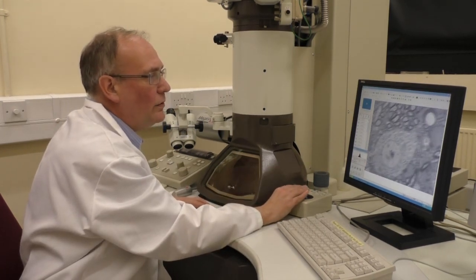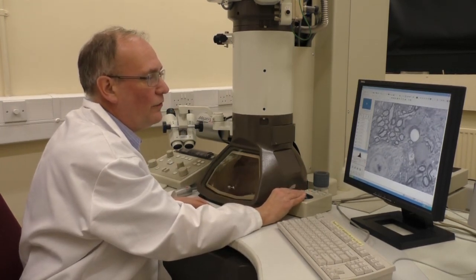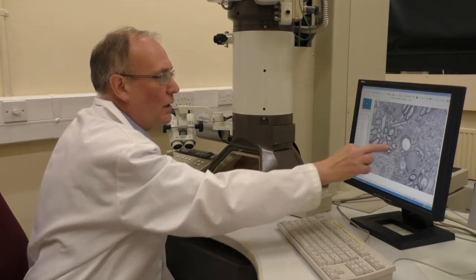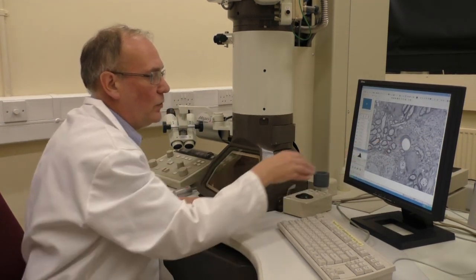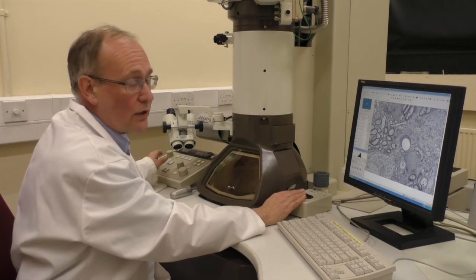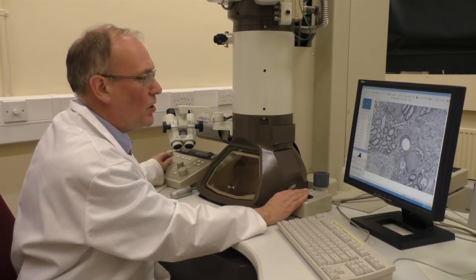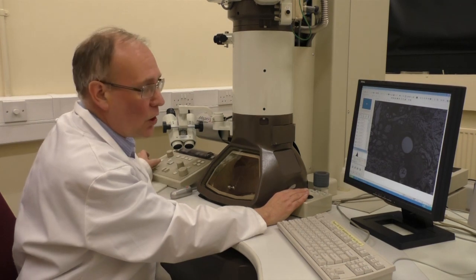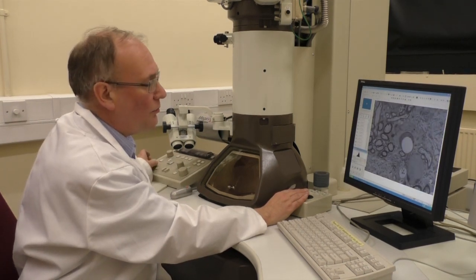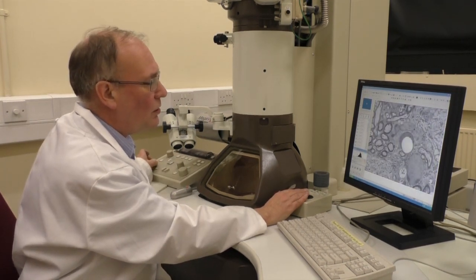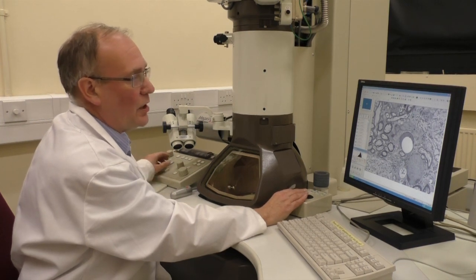I can move the sample round, and so I can find other features of interest. Here, for example, is a very small blood vessel. And of course, because it's an electron microscope, I can magnify the image much more than I could with a light microscope. So it goes from a few hundred times magnification up to 500,000 times magnification.